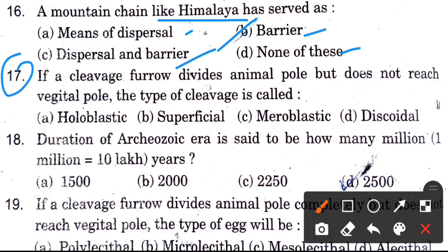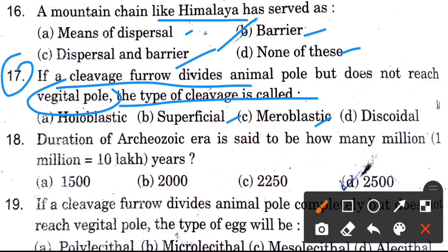Next question: If a cleavage furrow divides the animal pole but does not reach the vegetal pole, the type of cleavage is called — options are holoblastic, superficial, meroblastic, and discoidal. The answer is meroblastic cleavage.